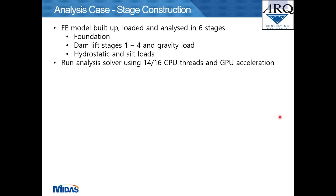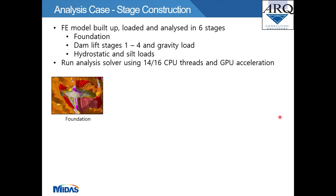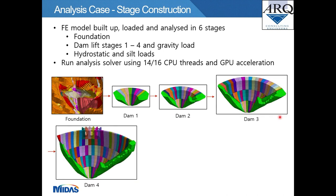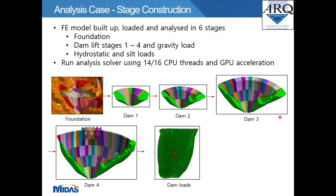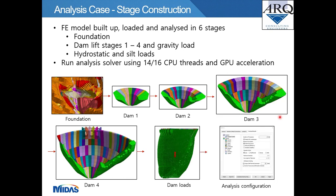A staged construction approach was used: the finite element model was built up, loaded, and analyzed in six stages. Stages one to four comprised four vertical lifts of the dam model to simulate behavior under gravity loading as the dam was constructed. The final stage involved activation of the hydrostatic and silt loads. The model was analyzed using the MIDAS FEA NX solver tool with 14 out of 16 CPU threads and GPU acceleration, allowing for reduced runtime.